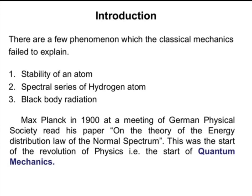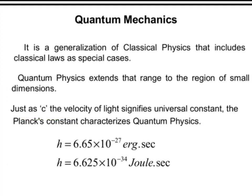Several phenomena cannot be proven by classical mechanics, such as the stability of an atom, the spectral series of the hydrogen atom, and black body radiation. These are explained in detail by quantum mechanics, developed by Max Planck in the 19th century. Quantum mechanics is a generalization of classical physics that includes classical laws as a special case. The quantum physics extends that range to the region of small dimensions.